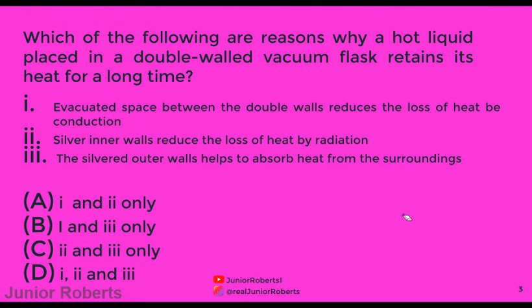The first question asks: which of the following are reasons why a hot liquid placed in a double-walled vacuum flask retains heat for a long time? The options are: an evacuated space between the double wall which reduces heat loss by conduction; silver inner walls reduce heat loss by radiation; and silver outer walls help to absorb heat from the surroundings. Options one and two are true, so the answer is A — one and two only.